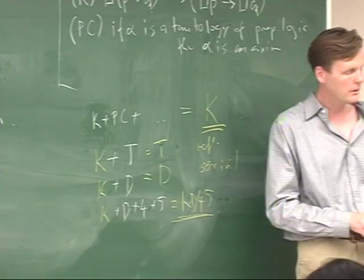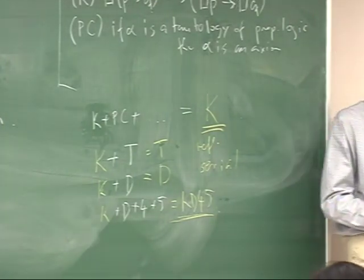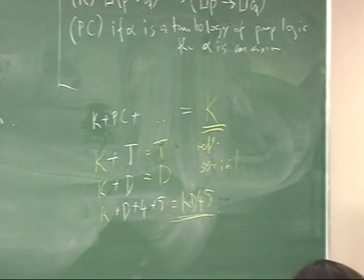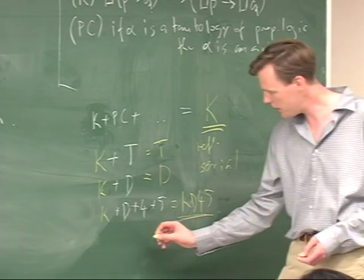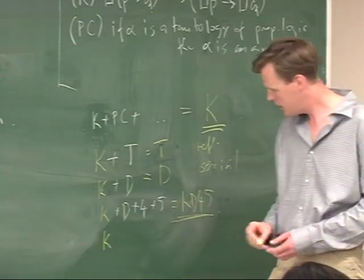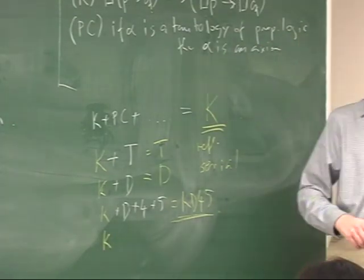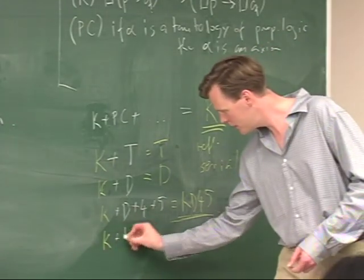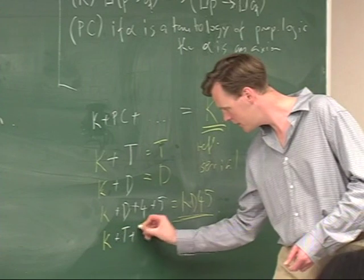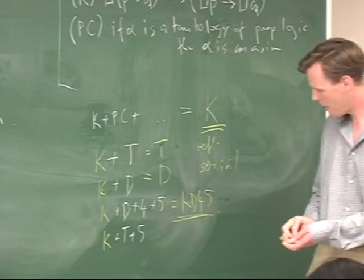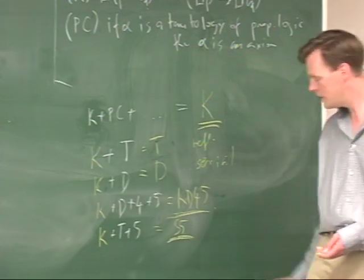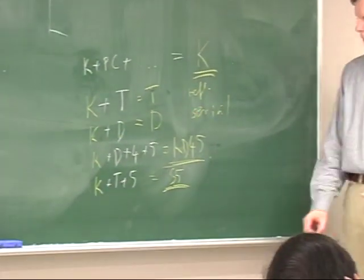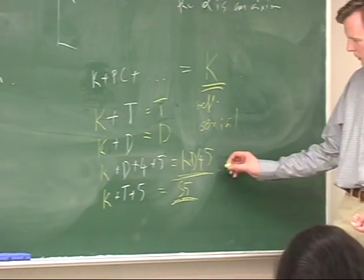If you add T to this, you get the system called S5. In fact, S5 is K plus T plus 5. It's called S5, but it's a bit confusing why.